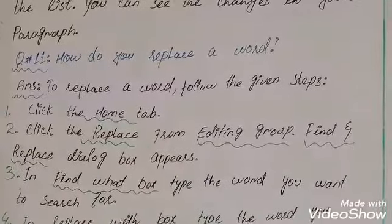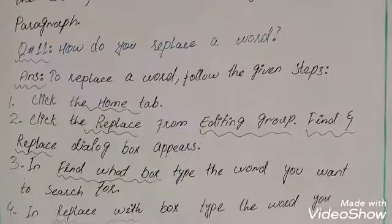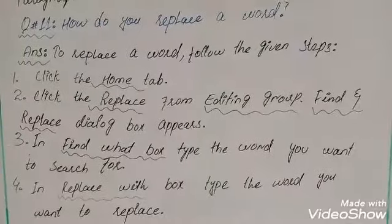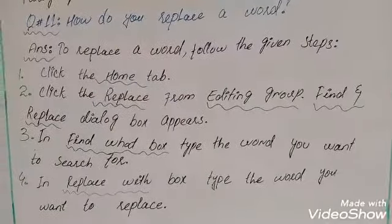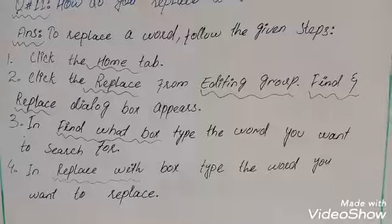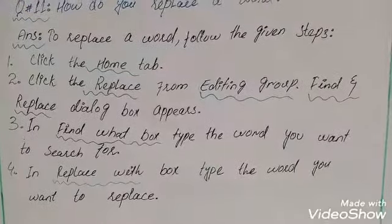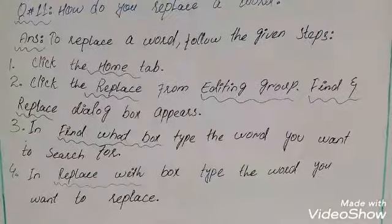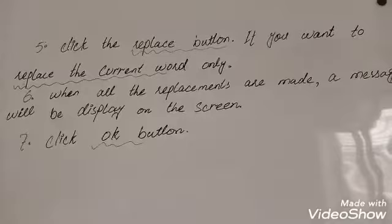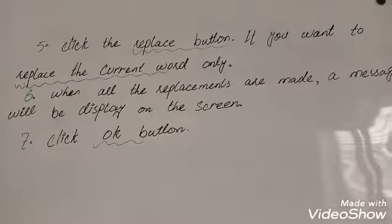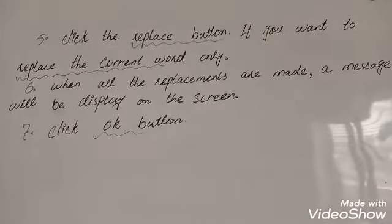Question number eleven: how do you replace a word? Answer: to replace a word, follow the given steps. Step one: click the Home tab. Step two: click Replace from the Editing group — the Find and Replace dialog box appears. Step three: in the Find What box, type the word you want to search for. Step four: in the Replace With box, type the word you want to replace. Step five: click the Replace button if you want to replace the current word only. Step six: when all the replacements are made, a message will be displayed on the screen. Last step: click the OK button.